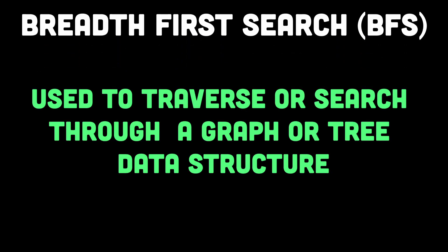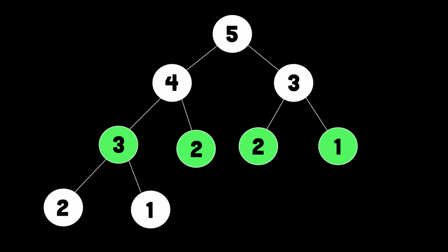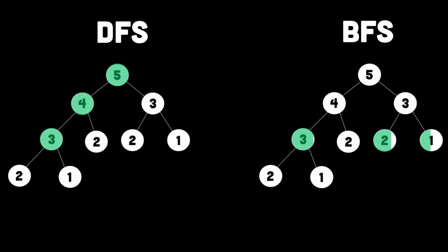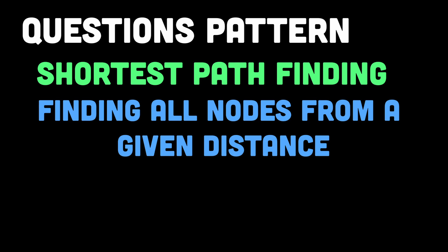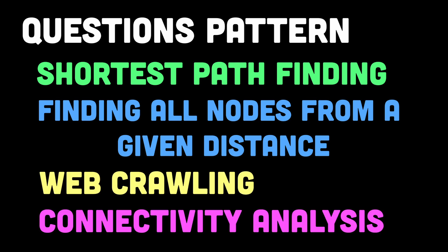The sixth and last pattern is Breadth-First Search, or BFS. This pattern is also used to traverse or search through a graph or tree, but it explores nodes in a breadth-wise manner — visiting all nodes at a particular depth level before moving to the next depth level. The steps are: start by visiting a starting node; visit all immediate neighboring nodes before visiting their neighbors; move horizontally across the same level; then move to the next level and repeat. BFS can be used to solve problems related to shortest pathfinding, finding all nodes at a specific distance from a starting node, web crawling, and connectivity analysis — determining reachable nodes from a given starting point.